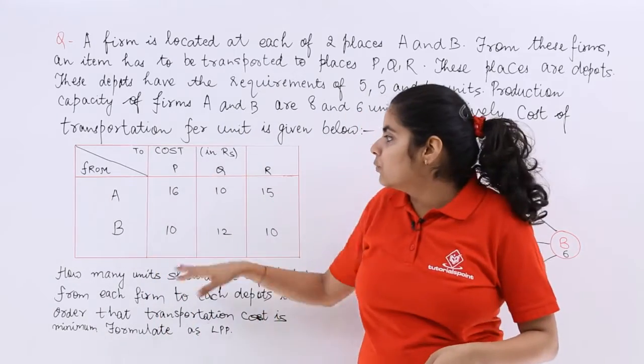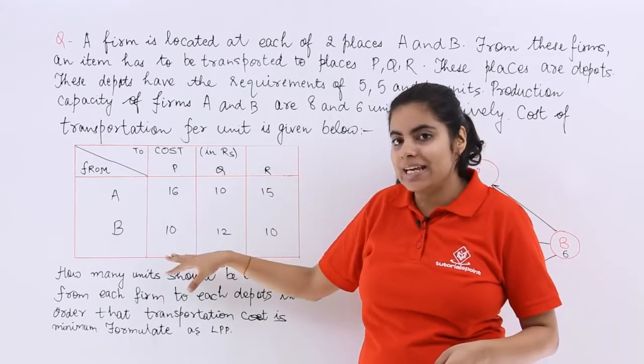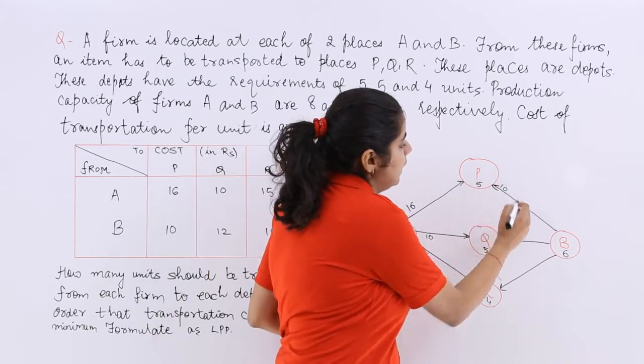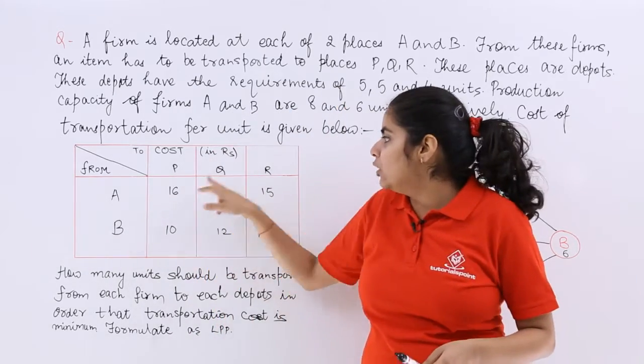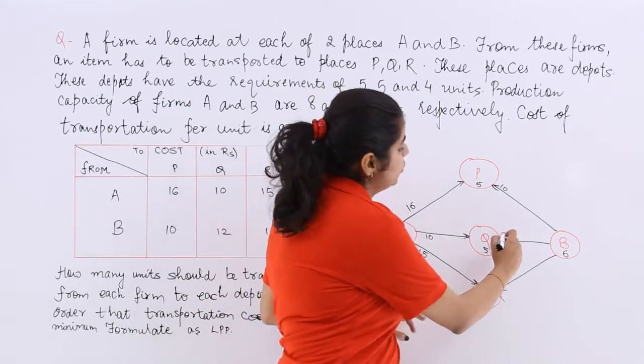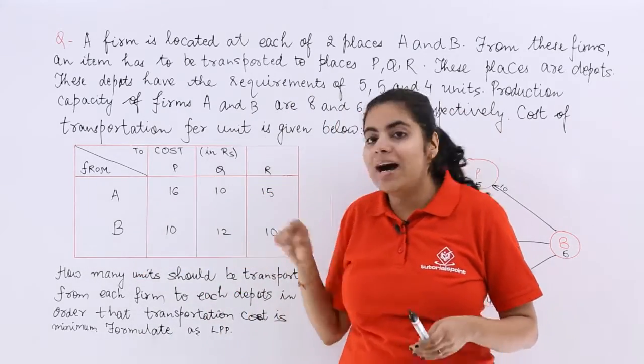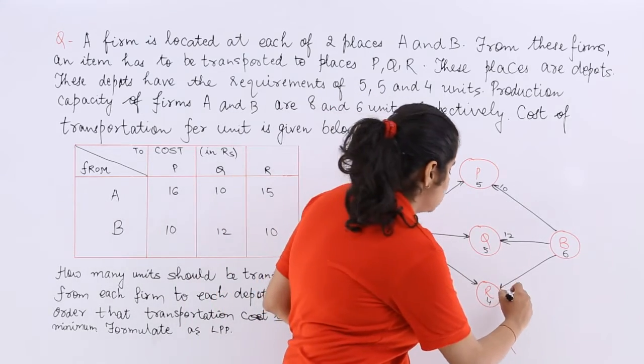Again the column. This one row is complete. The second row says B to P is 10. Then B to Q is 12. Last but not the least, B to R is 10.